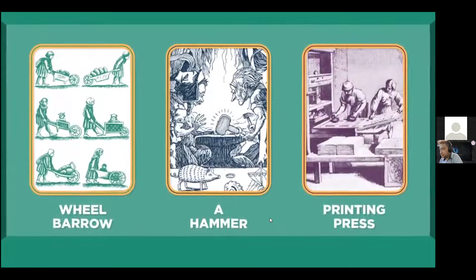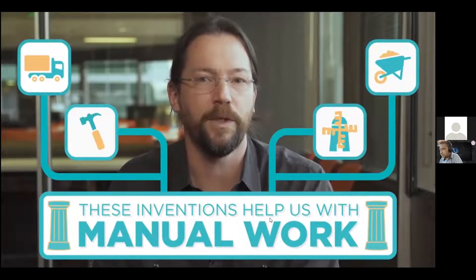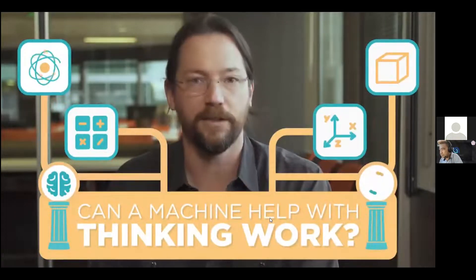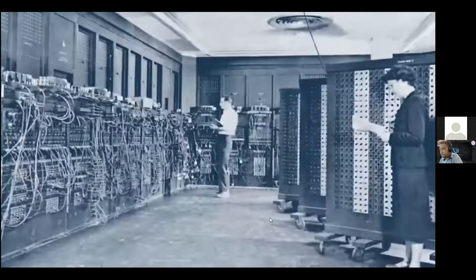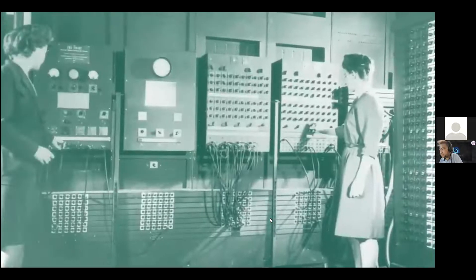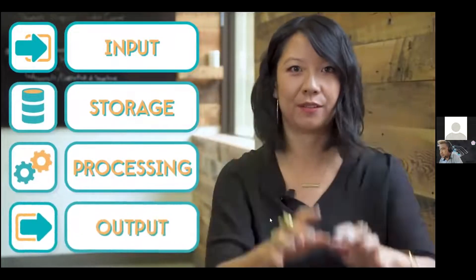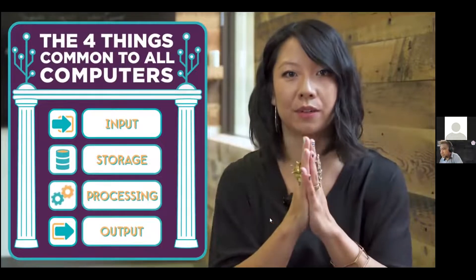As humans we've always built tools to help us solve problems — like a wheelbarrow, a hammer, a printing press, or a tractor trailer — all inventions that helped us with manual work. Over time people began to wonder if a machine could be built to help us with thinking work, like solving equations or tracking stars. Rather than moving physical things, these machines would need to manipulate information. The pioneers of computer science realized a thinking machine had to perform four different tasks: take input, store information, process it, and then output the results. These four things are common to all computers — that's what makes a computer a computer.